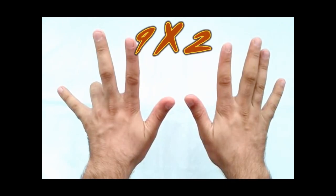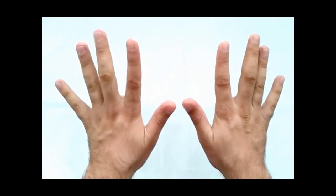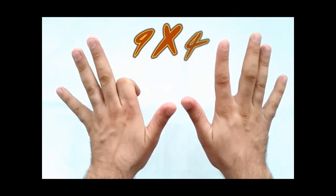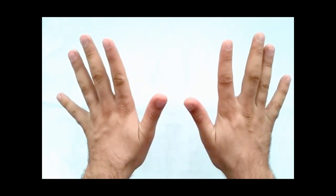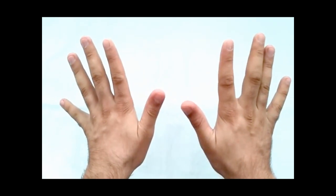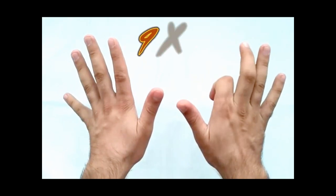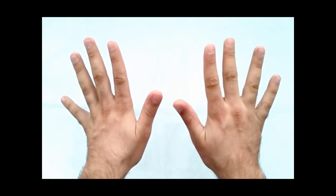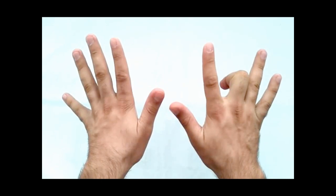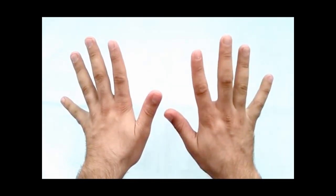Okay, let's try: nine times one is nine, nine times two is eighteen, nine times three is twenty-seven, nine times four is thirty-six, nine times five is forty-five, nine times six is fifty-four, nine times seven is sixty-three, nine times eight is seventy-two, nine times nine is eighty-one, nine times ten is ninety.